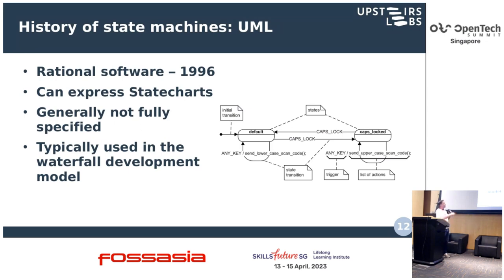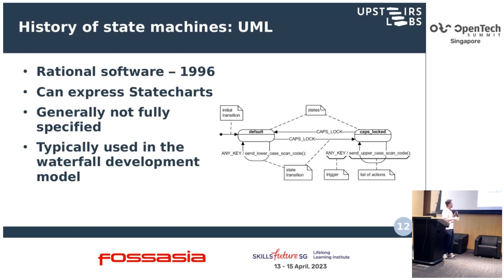After Harel state machines, UML became popular. Harel had added the statechart semantics to UML. The big difference between Unified Modeling Language and statecharts is that while Harel had conceived of this to analyze requirements and came up with something fully specified, UML in general is not used in a fully specified way — it's more used just to communicate requirements in design phase in waterfall development models. We analyze the requirements using UML and pass it down the chain and people write code.